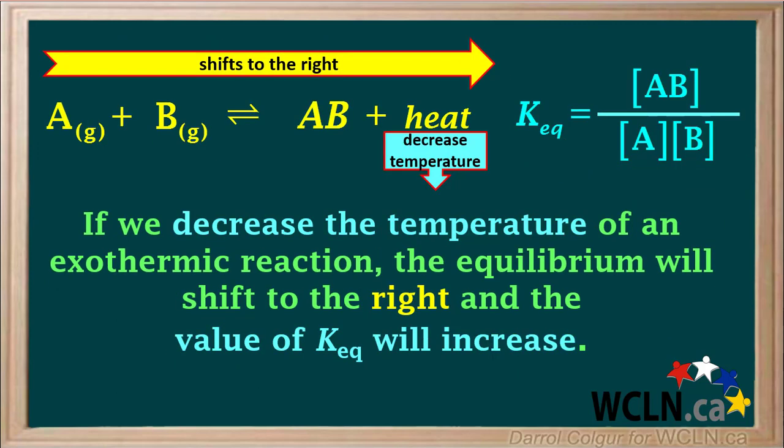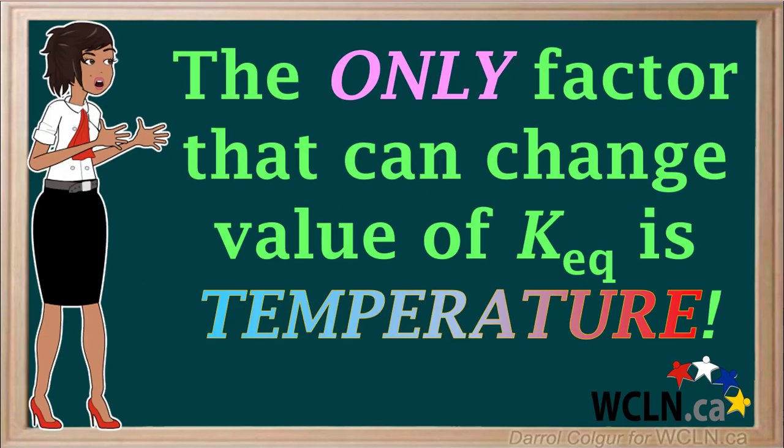We can reason that if we decrease the temperature of an exothermic reaction, the equilibrium will shift to the right, toward the heat term, and the ratio of products to reactants and the value of KEQ will both increase. It is very important to remember that if the equation for an equilibrium reaction stays the same, the only stress that can change the value of KEQ is a change in temperature.